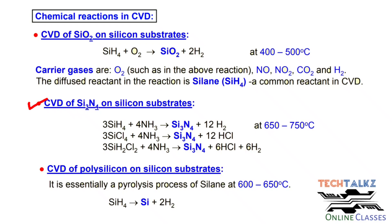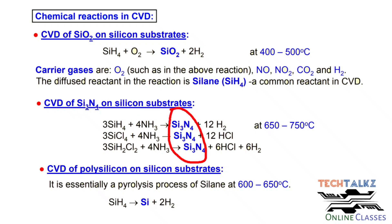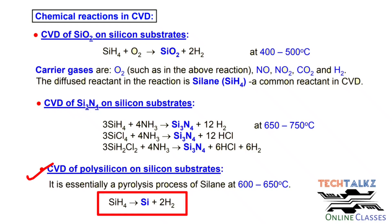For silicon nitride deposition, the reactant gases are silane, SiCl4 (dichlorosilane), and ammonia. For polysilicon — multiple layers of single crystalline silicon called polycrystalline silicon — silane is treated at high temperature. There will be decomposition, i.e. pyrolysis. You get silicon and hydrogen. For multiple times silicon is coated, and then polysilicon is formed.